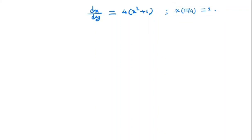Note that this is a separable differential equation, so we can separate x and y. By separating, we can write it as dx over x squared plus 1 is equal to 4 dy.